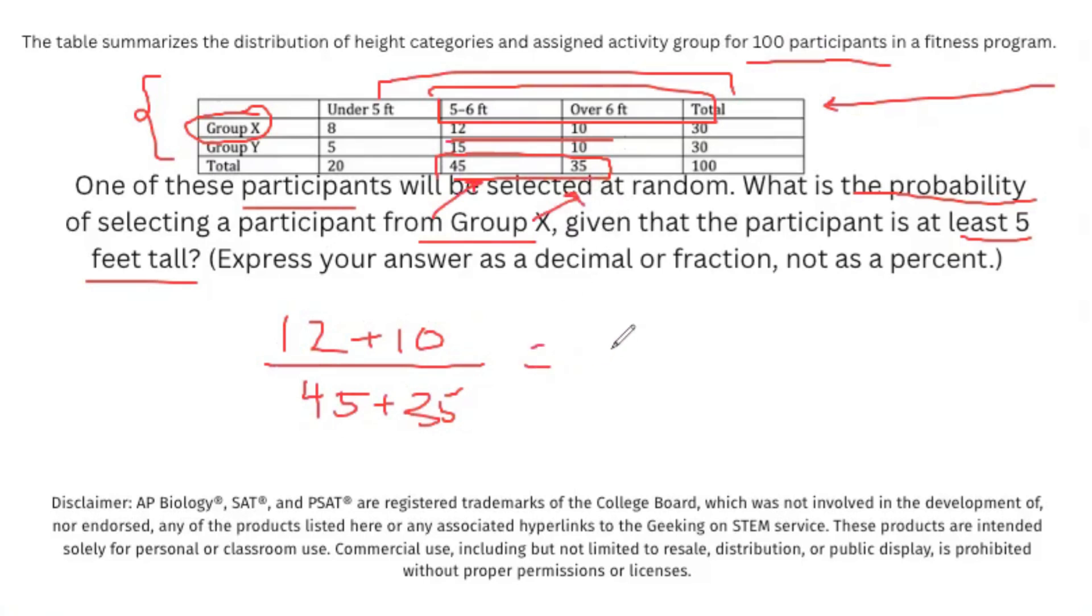We can go ahead and assess the total of this. So we get 22 on top, and then we get 80 on the bottom. So 12 plus 10 is 22, and 45 plus 35 is going to be 80. Once again, you can go ahead and type this directly into Desmos or your calculator. It does say to express your answer as a fraction or a decimal and not as a percent. So you can leave the fraction this way. If you're typing it in, you can also reduce it for your final answer as 11 over 40.